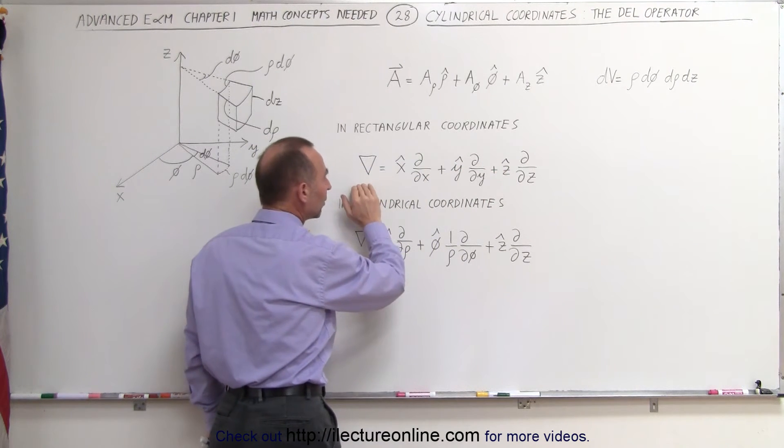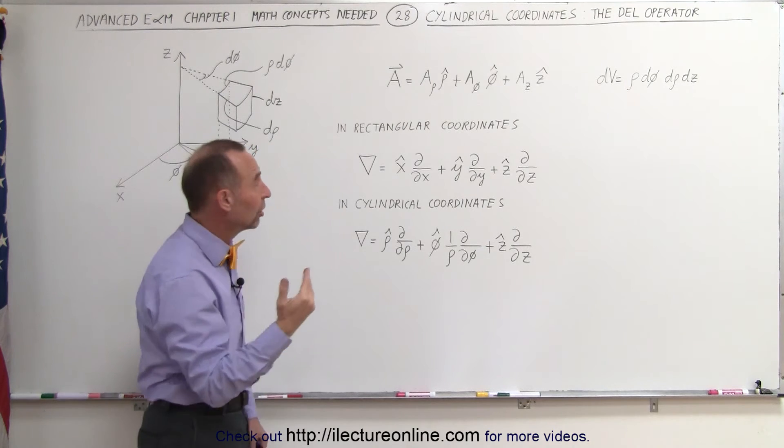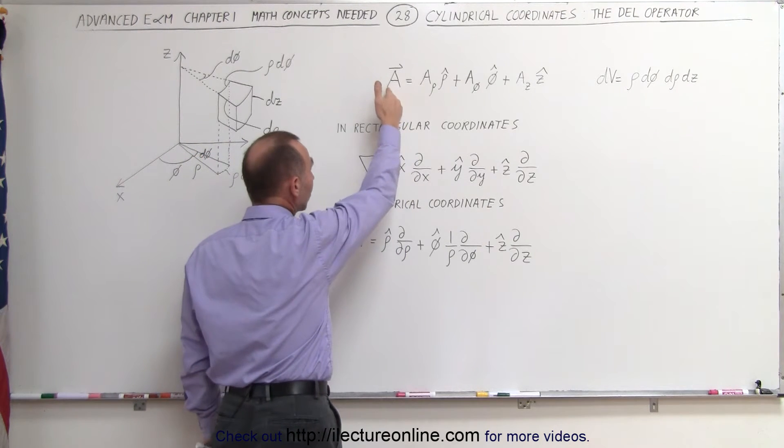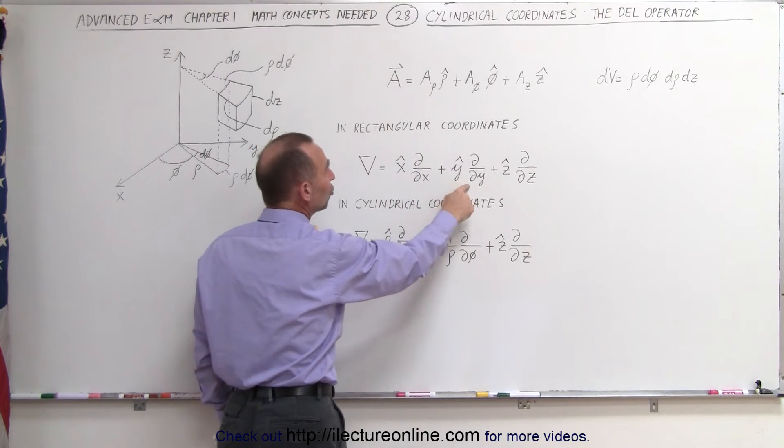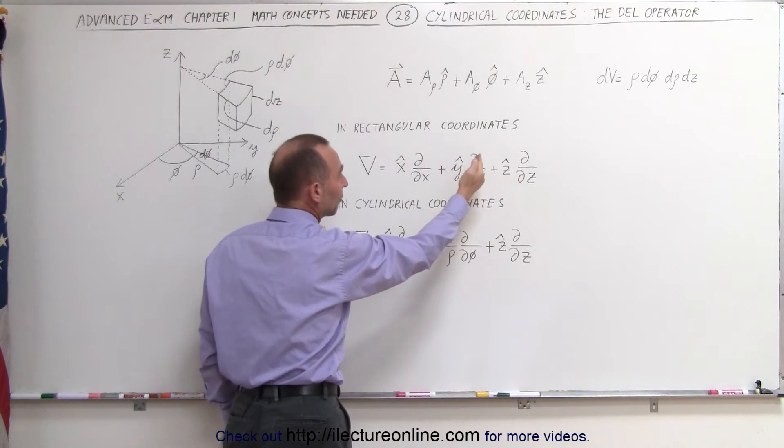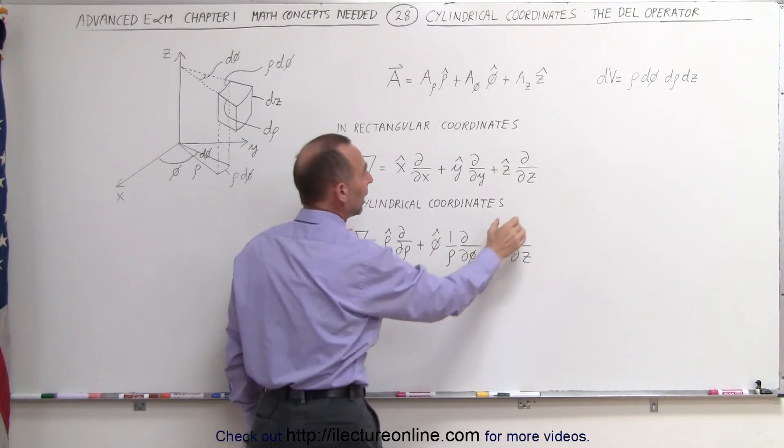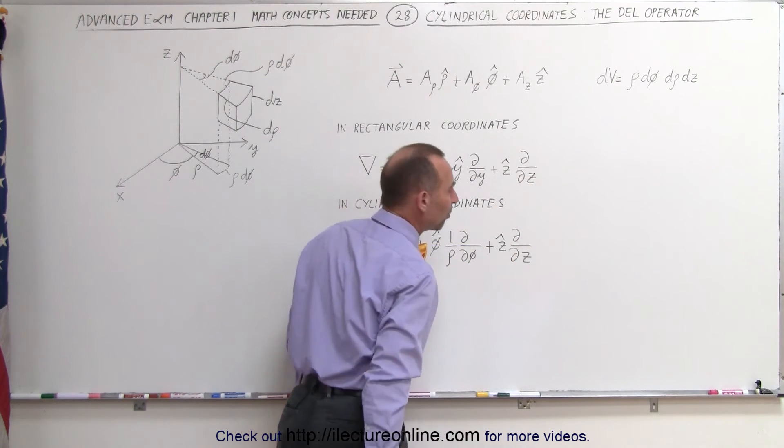In this case it will be the change of the vector here with respect to x only. That's why we take the partial derivative. The change of the vector with respect to y, therefore the partial derivative with respect to y. And here again the partial derivative with respect to z.